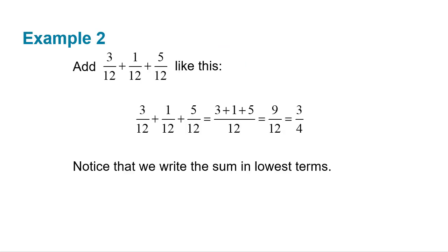Same thing if we've got multiples — three plus one plus five still gives us nine. Nine twelfths reduces to three-fourths.